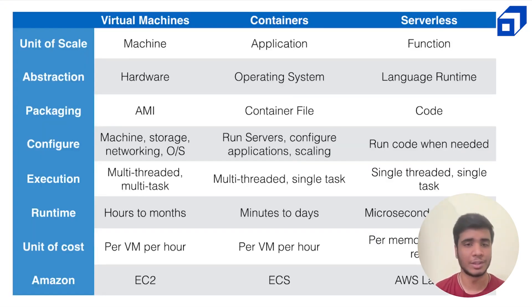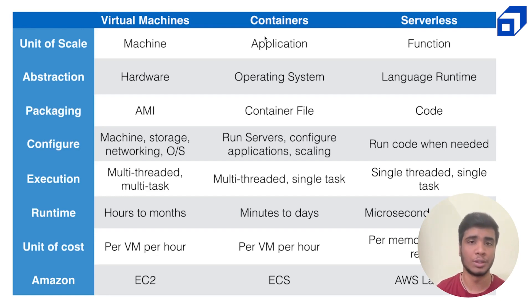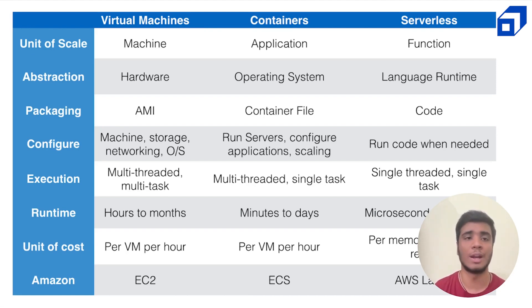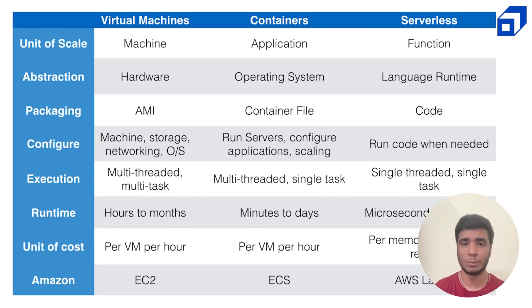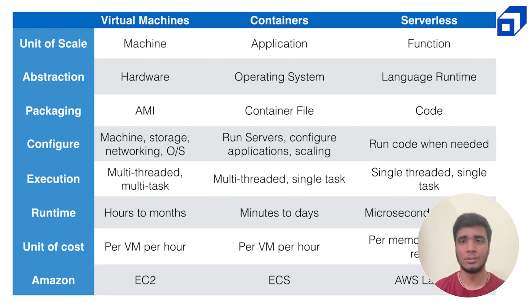I wanted to show an interesting comparison from a website called Couchbase. It highlights the difference between serverless and conventional modes of computing. With virtual machines, the unit of scale is the number of machines you provision. With serverless, you don't care what machine it runs on — you only deal with functions. The number of functions you run is the unit of scale.